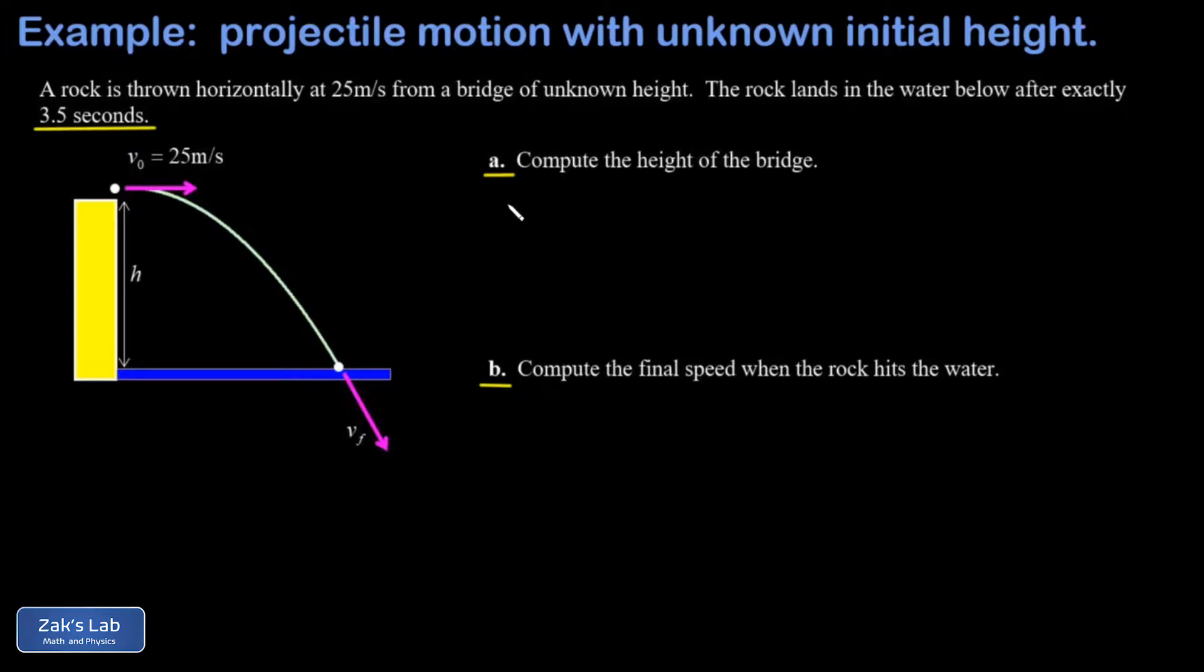So getting into part A here, the key point is that the initial Y velocity is zero. All that initial velocity is in the X direction. So if we just make a quick list of everything we know about the Y direction, I'm going to put the origin at the level of the water, which means the initial height is H. That's the unknown height of the bridge.